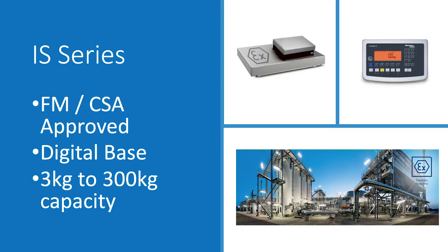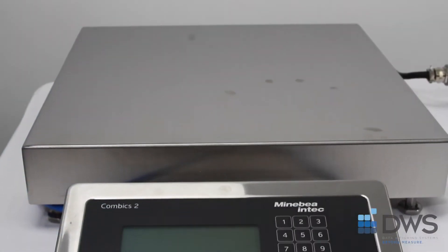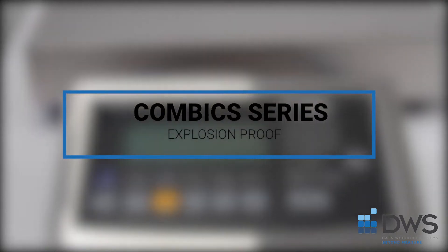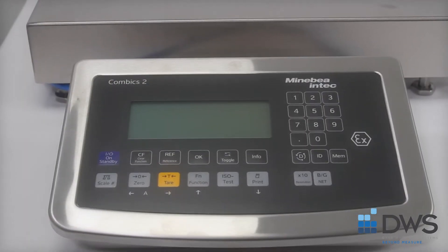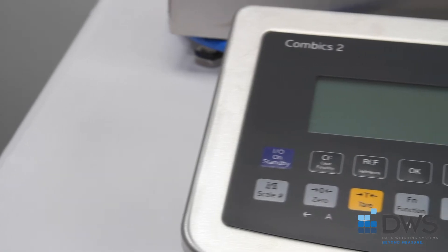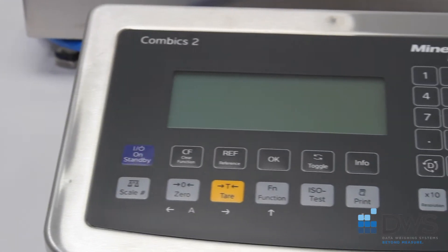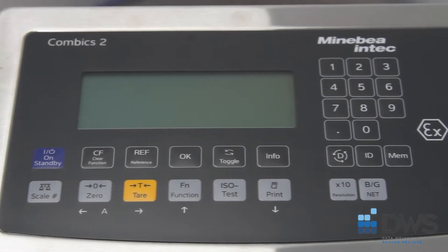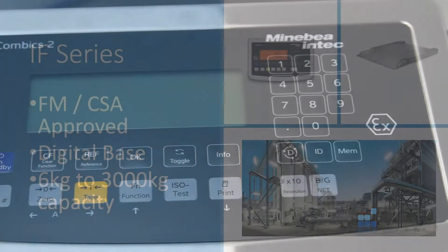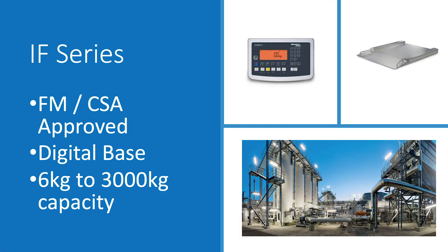Excellent for gas filling. Complementing the EX line is the Combex and IF Series stainless steel-approved platforms and indicators. From 6 kg to 3,000 kg with multiple platform sizes and configurations.